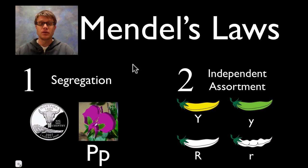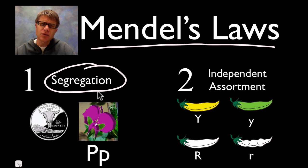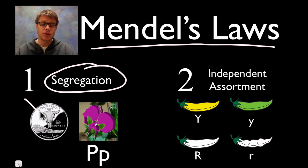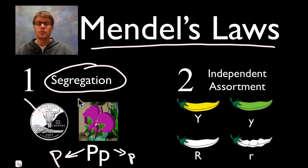He basically described two laws. The first is the law of segregation. The law of segregation means that each organism is going to have two genes for each trait. In this case it's heterozygous — so it's got one big P and one little p. The law of segregation is just like flipping a coin: there's a 50% chance that the gamete or the next generation is going to get the big P, and a 50% chance it's going to get the little p. The law of segregation basically means everything is a coin flip, and there's a coin flip on each gene.